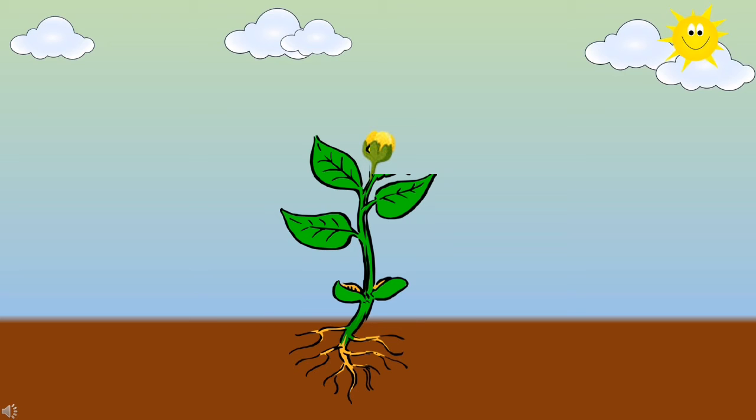Now, children, here you can see a small bud has come out of a plant. Now, let's see the next stage of growth of a plant.